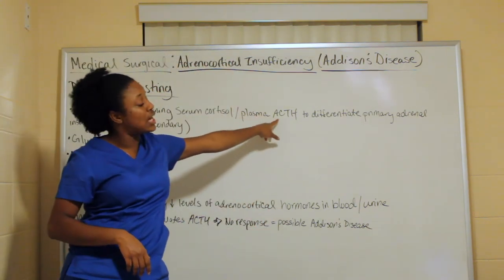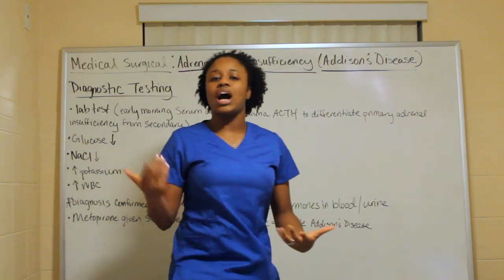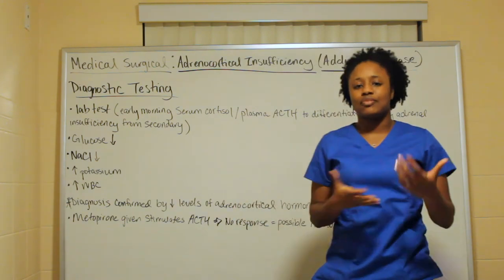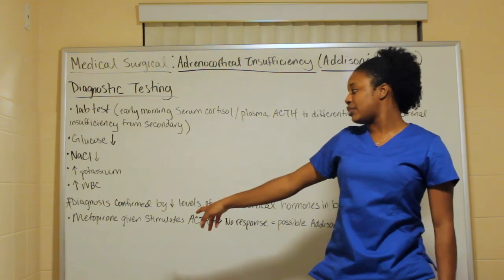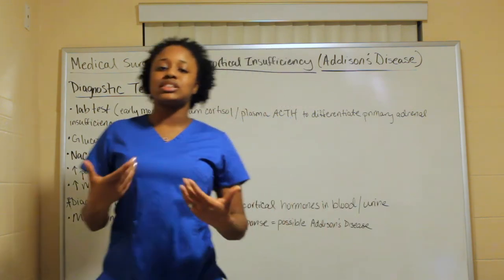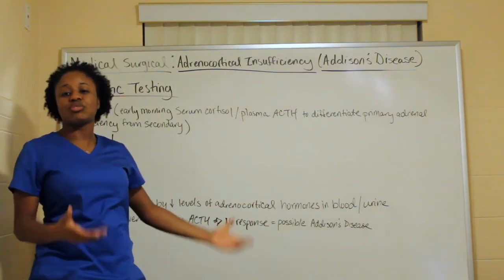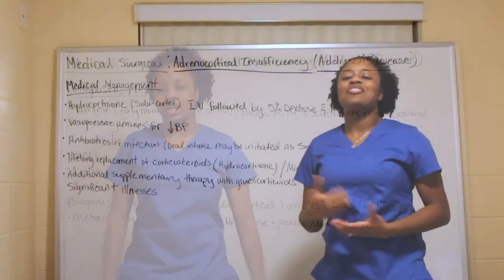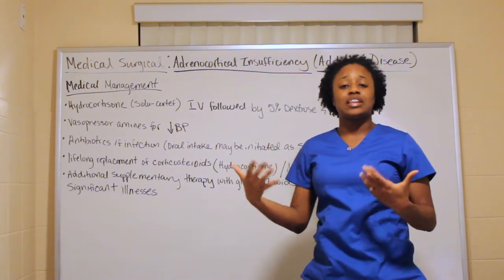When checking blood or urine, they assess whether cortical hormone levels are low and investigate why. You can also administer metyrapone to stimulate ACTH — if there's no response, it most likely confirms Addison's disease.